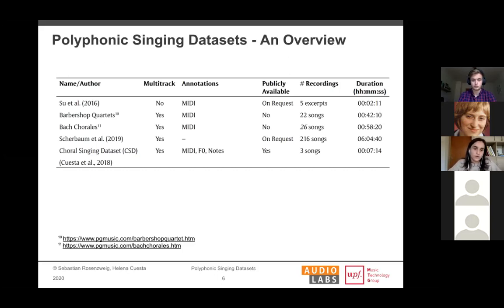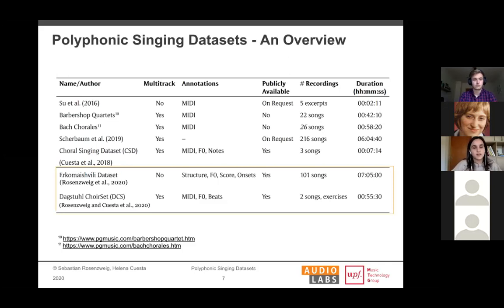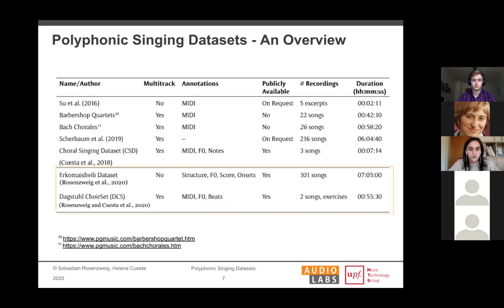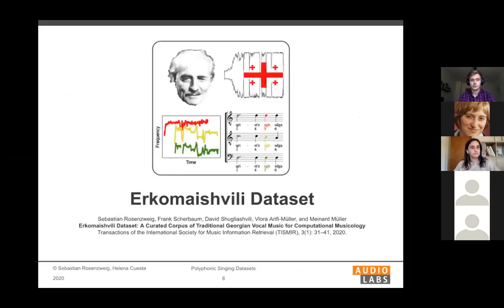Today we want to talk about two new datasets released this year: the Akumashvili dataset and the Dagstuhl Choir Set. The Akumashvili dataset, released earlier this year, is not multi-track but contains Georgian vocal music with quite a lot of annotations and is publicly available. The Dagstuhl Choir Set is a multi-track dataset recorded during the Dagstuhl seminar last year, also with rich annotations and publicly available as a TISMIR dataset paper.